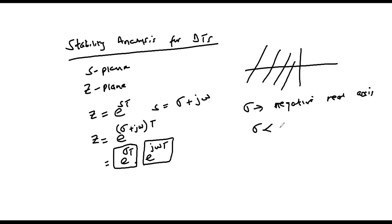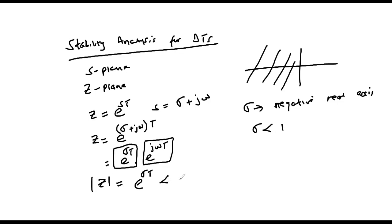For stability of time continuous systems, gamma must fall on the negative real axis, and therefore gamma is less than zero. In the z-plane, the magnitude of z is obtained from exponential gamma t, and since gamma is negative, this term will also be less than one.